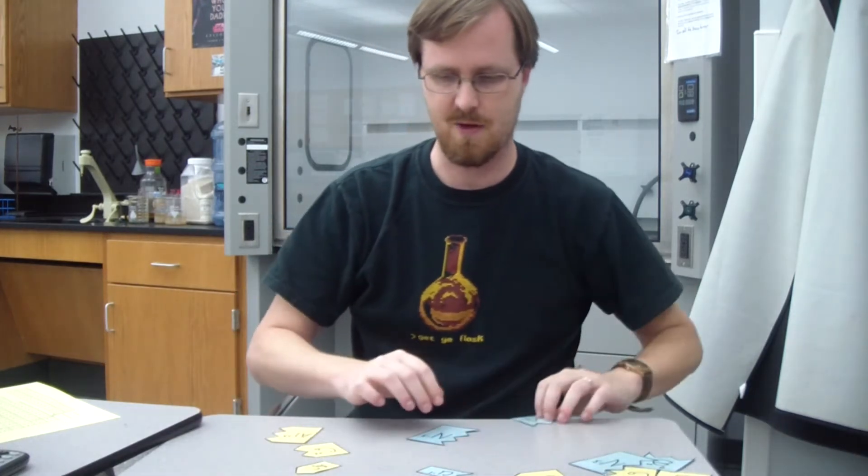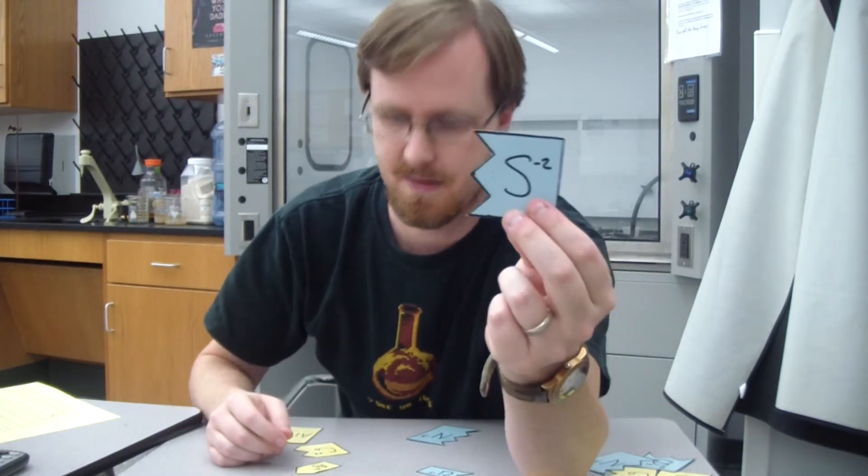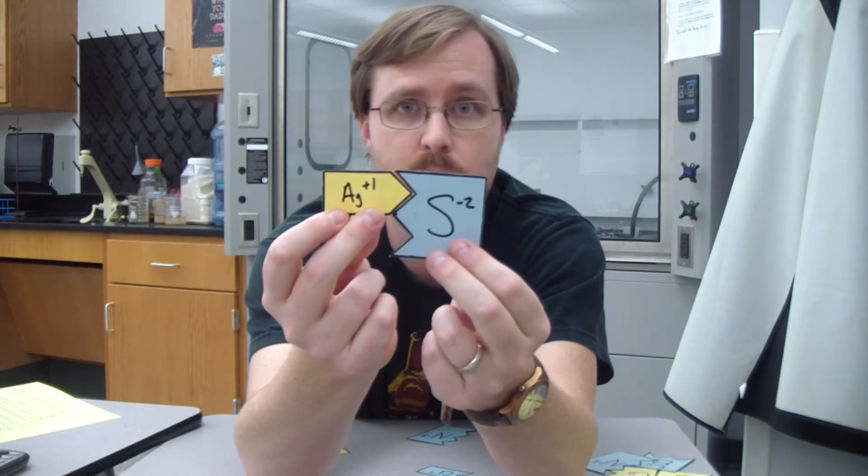But what happens if you have something like a negative 2 and a positive 1? When you put these together, they clearly don't add up to 0. So what do you do?